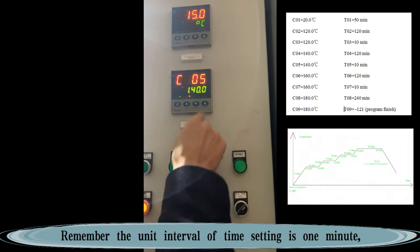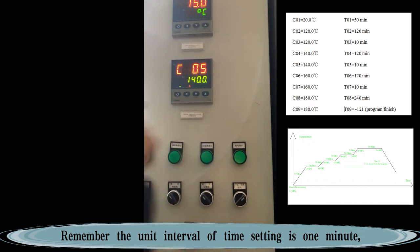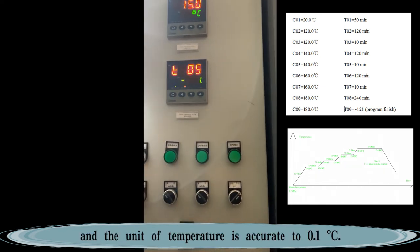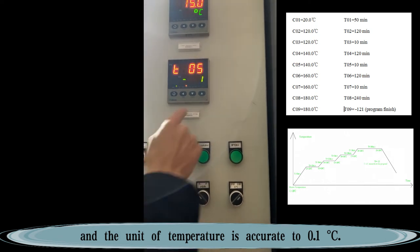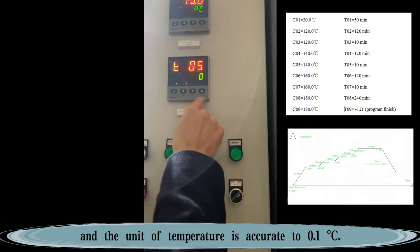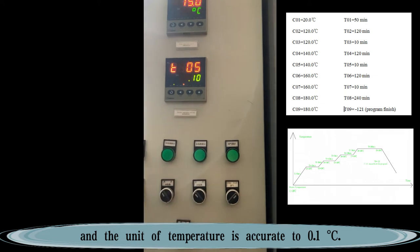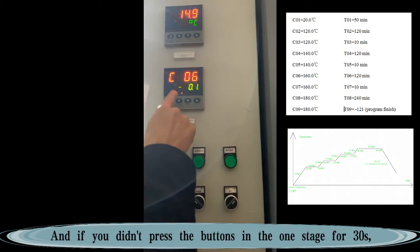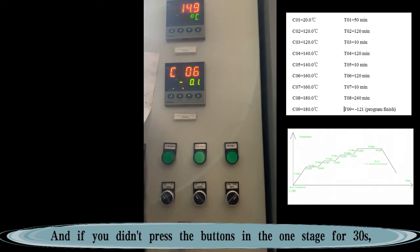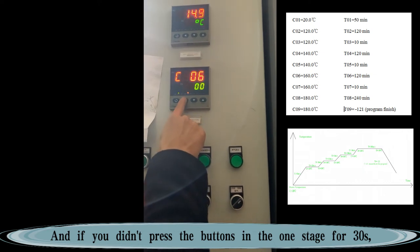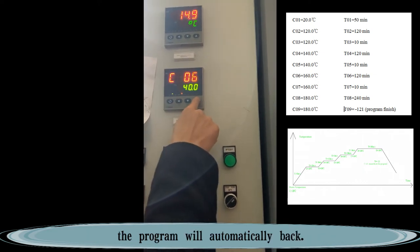Remember, the unit interval of time setting is 1 minute, and the unit of temperature is accurate to 0.1 degrees Celsius. And if you didn't press the buttons in one stage for 30 seconds, the program will automatically back. You just need to press button 1 for 2 seconds to continue setting.